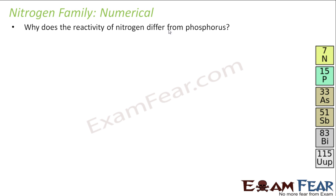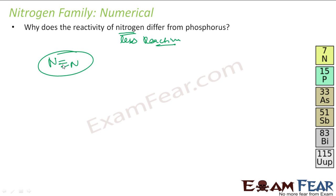We have seen that nitrogen is less reactive than phosphorus. Why? Because nitrogen forms the N2 molecule with a triple bond. This triple bond has a very high bond strength — it is difficult to break. It has very high bond enthalpy.